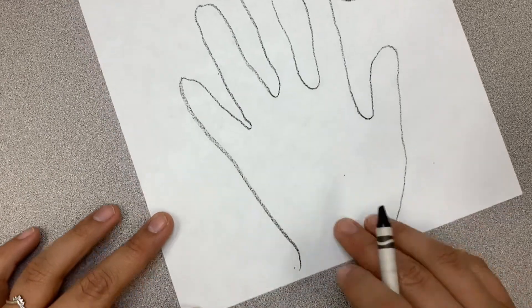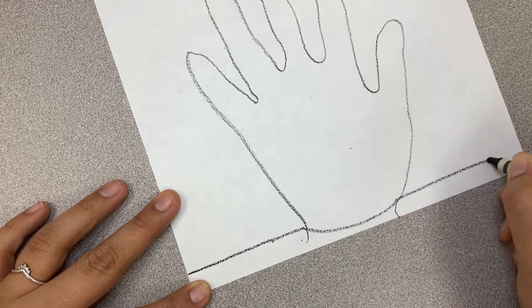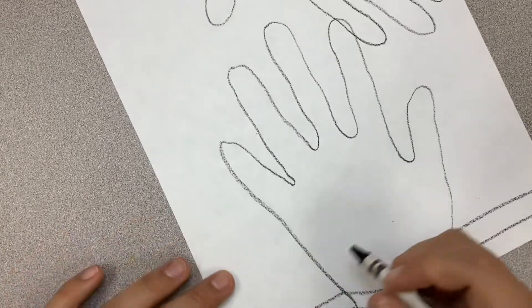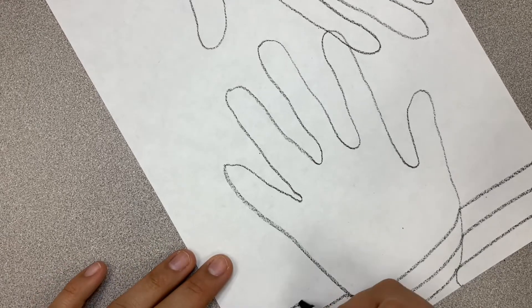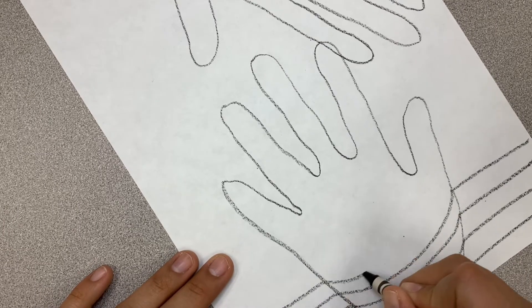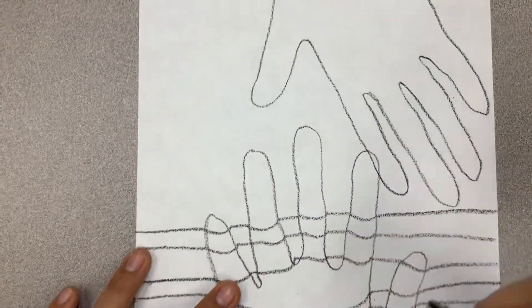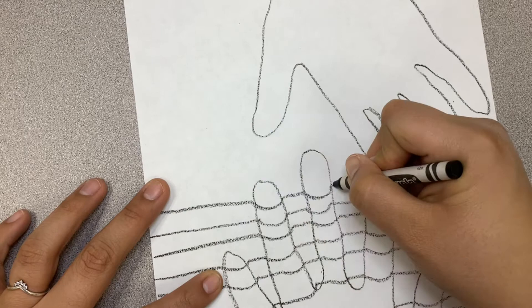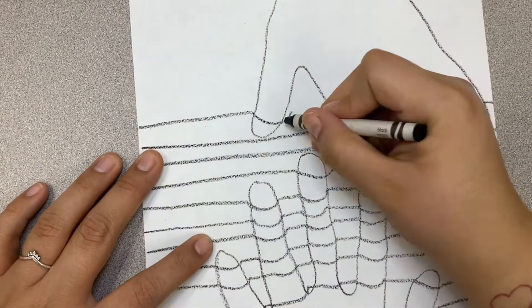So I'm going to be doing next is drawing my contour lines. So if it's not my hand, it's a straight line. If it's the hand, it's curved. So it's straight, curved, straight, straight, curved, straight, straight, curved, straight, straight, straight, curved, straight.